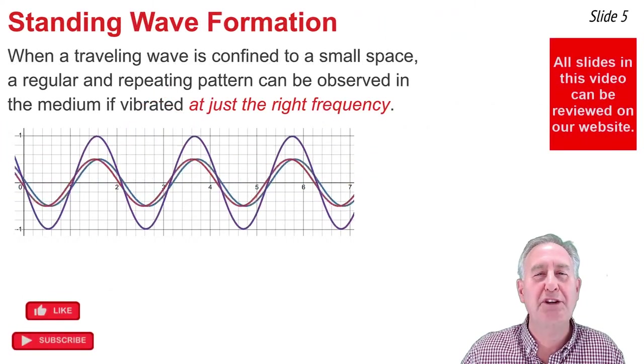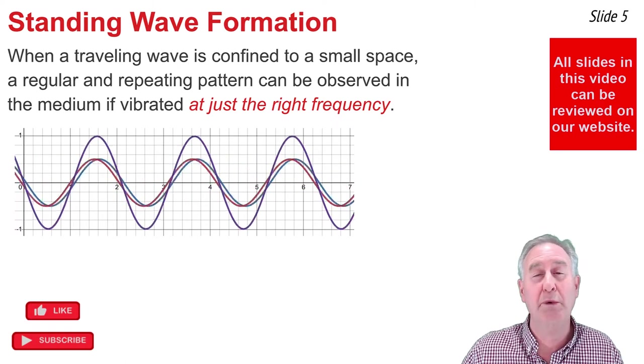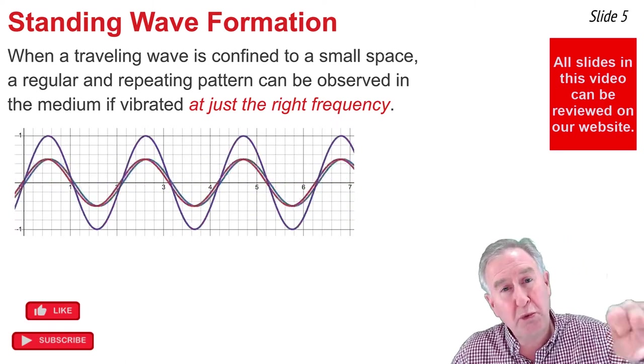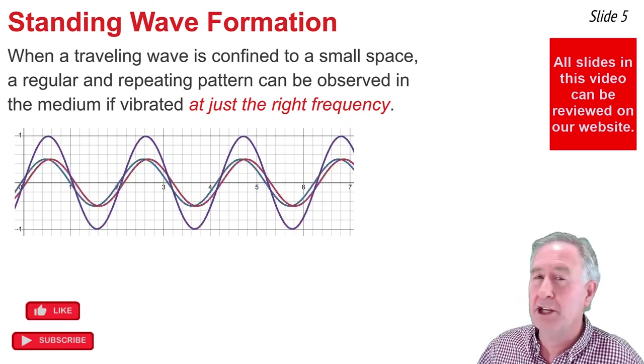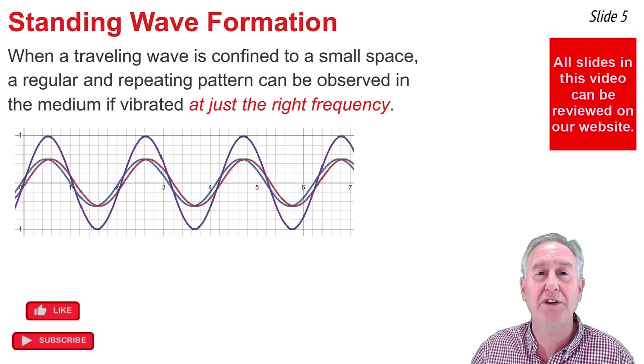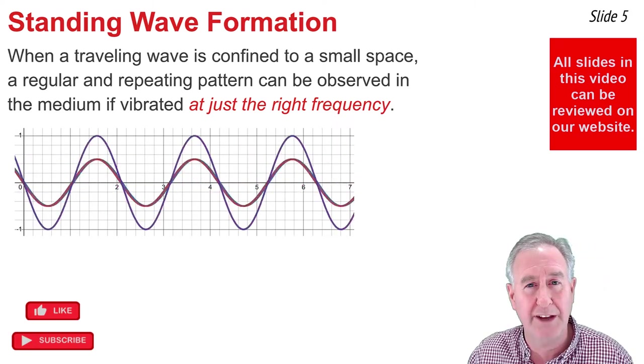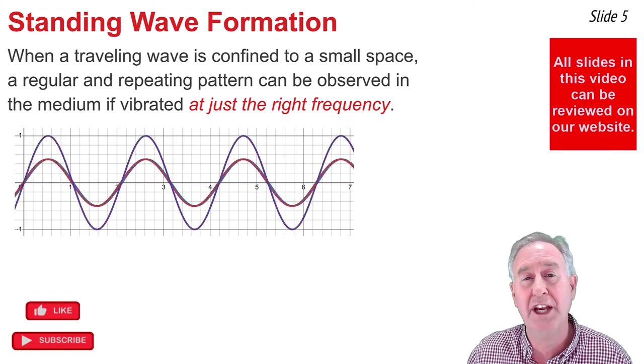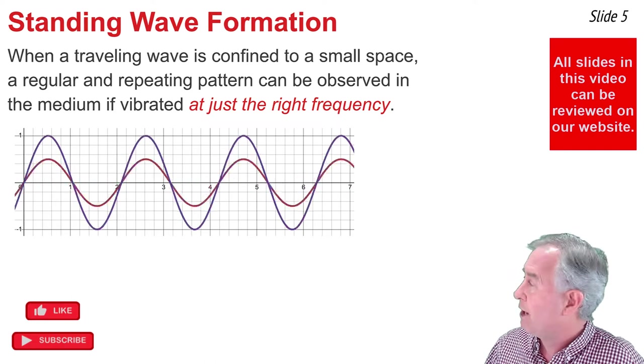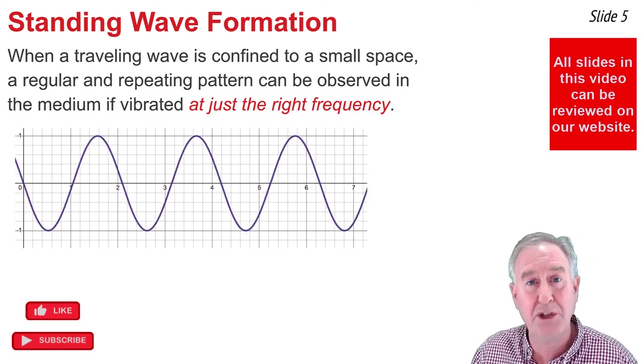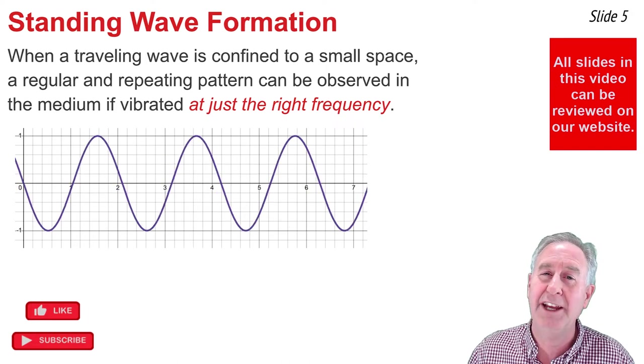When a wave is confined to a small space, it is possible to view the medium vibrating in a regular and repeating manner, as long as you introduce waves into it with just the right frequency. This animation portrays a red wave moving to the right and a blue wave moving to the left. Those are traveling waves, but you would not observe the traveling wave. Instead, you would observe the interference of those two traveling waves, and that would be the purple wave. And if you watch the purple wave, you'll notice it's vibrating up and down in a repeating and regular manner.